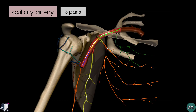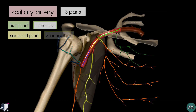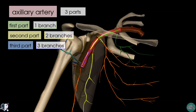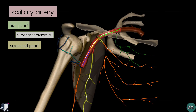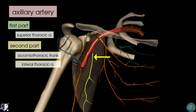I've removed the pectoralis minor muscle and we'll take a look at the six branches of the axillary artery. Quite conveniently, the first part of the axillary artery has one branch, the second part has two branches, and the third part gives rise to three branches. The first branch, highlighted in green arising from the first part, is called the superior thoracic artery. The two branches from the second part are highlighted in yellow: this one is the acromiothoracic trunk, also known as the thoracoacromial artery, and this one is the lateral thoracic artery.